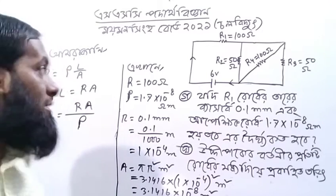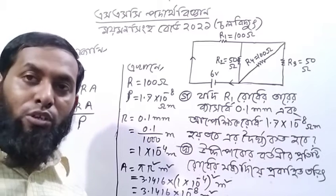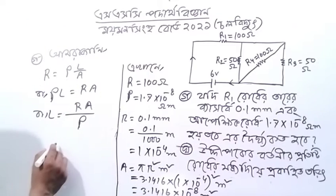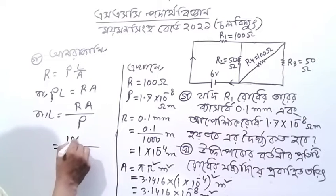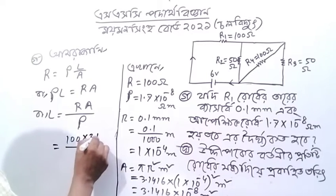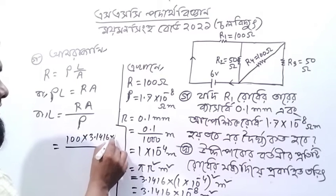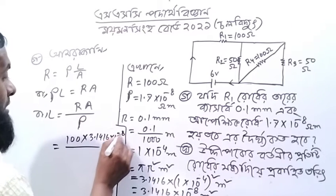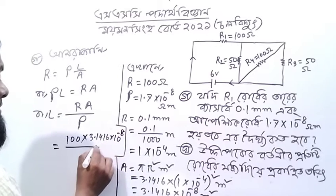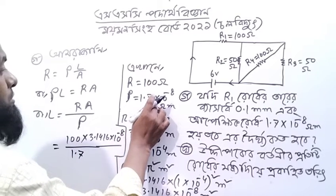Rho equal to R A. I am going to show you the same way.